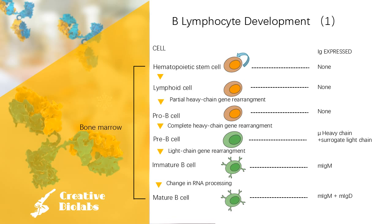The cells undergo DJ joining on the H chain chromosome to become early pro-B cells. Joining a V segment to the DJH completes the late pro-B cell stage. Pro-B cells become pre-B cells when they express membrane M chains with surrogate light chains in the pre-B receptor. Surrogate light chains resemble actual light chains but are the same on every pre-B cell. Following proliferation, small pre-B cells no longer dividing undergo VJ joining on one L chain chromosome. Once L chain has been successfully synthesized, it is expressed with M chain on the cell membrane and the cell is called an immature B cell.